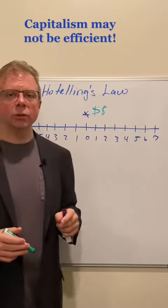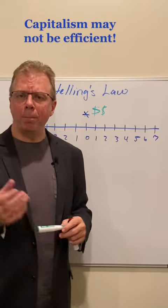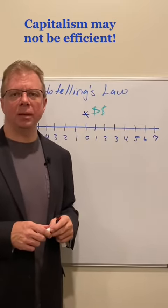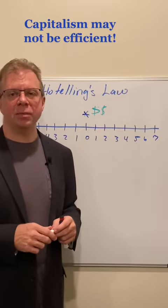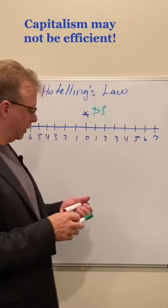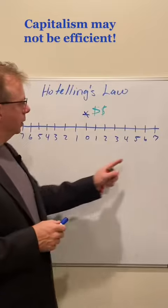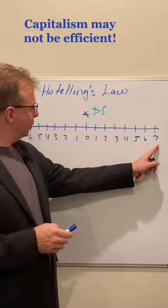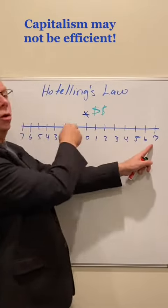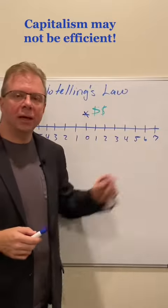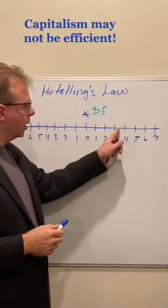So somebody else comes along and goes, oh, that dude is making a bunch of cash selling ice cream on that beach. I could do the same thing, and I'd make a bunch of money too. So here's what happens. He goes, where should I be? Well, I could come down to an end, but then this guy's still going to get all this and all this, because who's going to walk all the way down to this end of the beach, right? So maybe I go halfway in between.